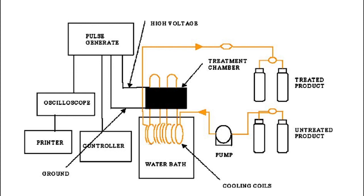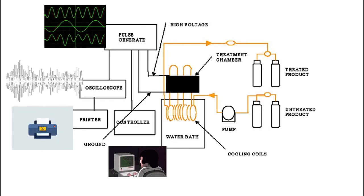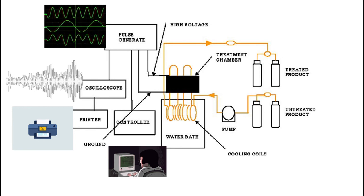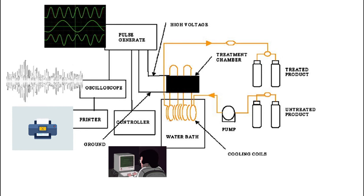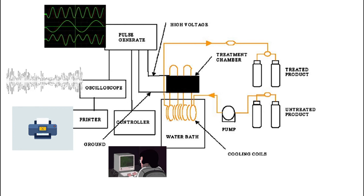Besides electrical parameters such as field strength and specific energy input, product temperature and product recipe also have an impact on treatment intensity. The schematic flow of pulsed electric field system is shown. If you see this it shows a pulse generated from oscilloscope going to the treatment chamber and the product is passed in the treatment chamber and the product is released after it is aseptically packaged.